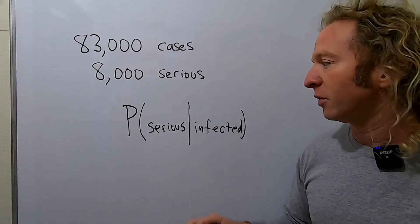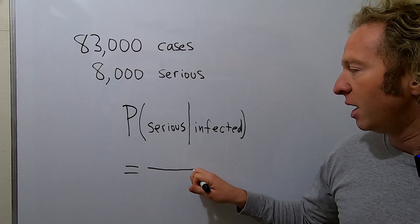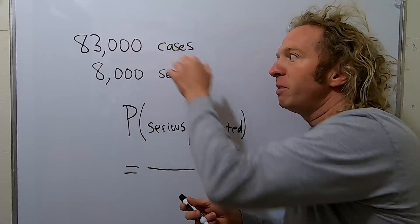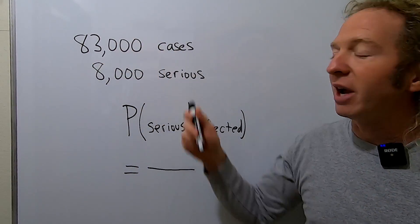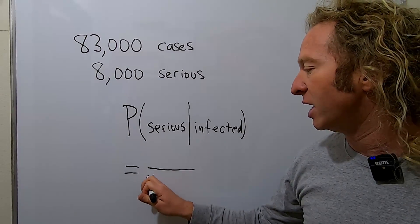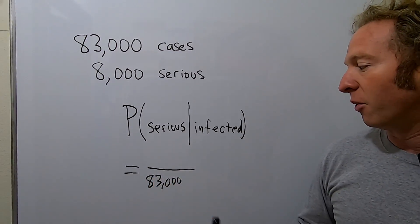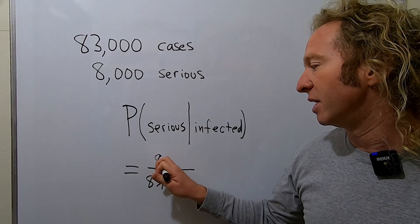Okay, so let's work it out. It's a fraction, and on the bottom it's the total number of possibilities. We're assuming we're infected, so as of today, February 28th, there are 83,000 cases, so you have 83,000 on the bottom. Of these infected people, so far 8,000 have a serious case.